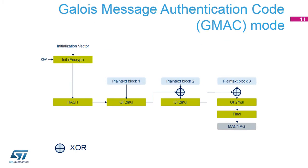Galois message authentication code, or GMAC, allows authenticating a message and generating the corresponding message authentication code. GMAC is similar to GCM, except that it is applied to a message that only contains the plaintext authenticated header. All steps and settings are the same as GCM, except that the payload phase will not be used.